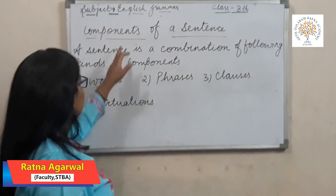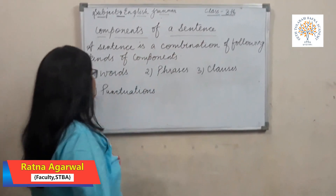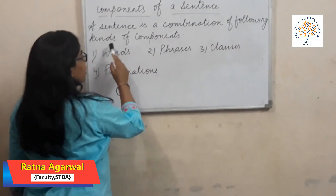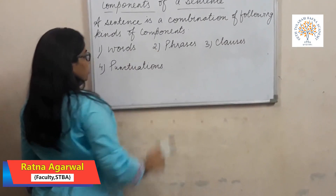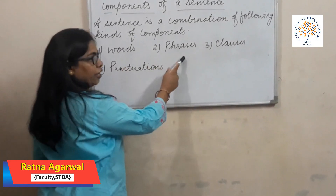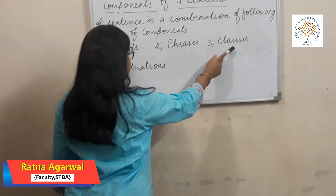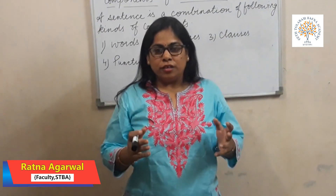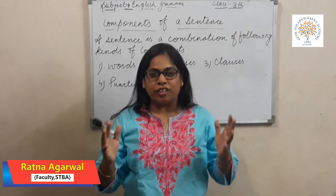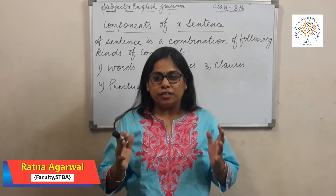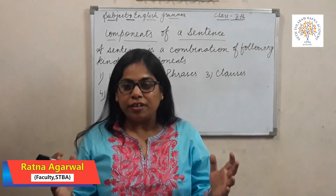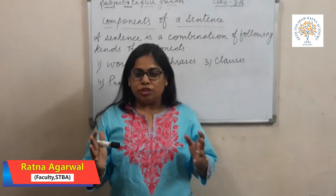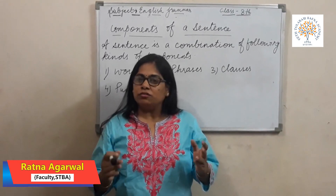Now let's study about components of a sentence. A sentence is a combination of the following kinds of components: words, phrases, clauses and punctuation. A word is a fixed arrangement of letters that has an independent meaning. For example, fruit, animal, nation, etc.